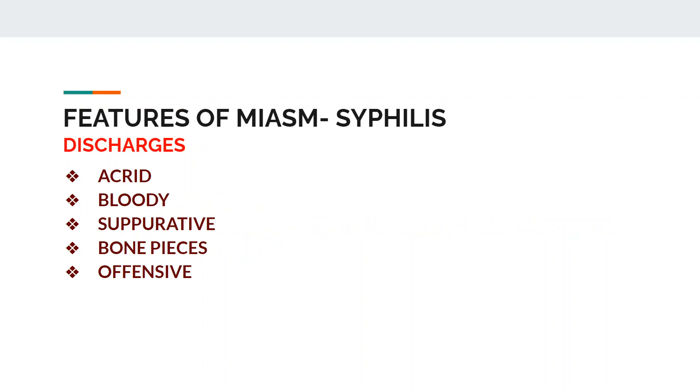Discharges in syphilitic miasm are acrid, bloody, and suppurative. They may contain bone pieces and are offensive.